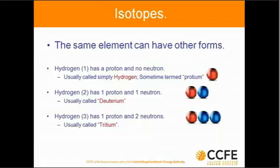One in every 7,000 of the atoms of hydrogen in that glass of water, or bathwater or seawater, is deuterium, which is a proton with a neutron. Now, this deuterium is one of the fuels we use in nuclear fusion, so we're interested in this. And as you can see, if one in every 7,000 of the atoms has deuterium in it, that means there's a lot of deuterium in the world — lots of it in the sea.